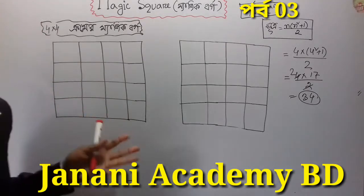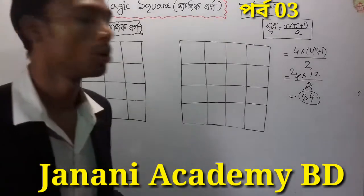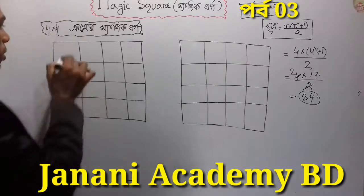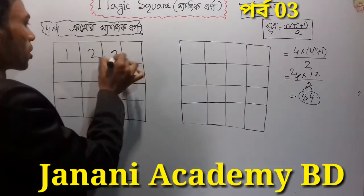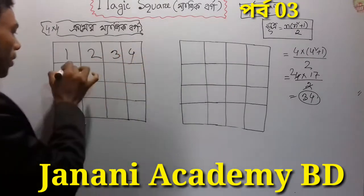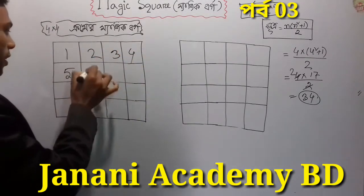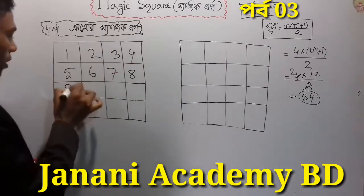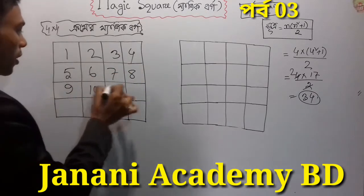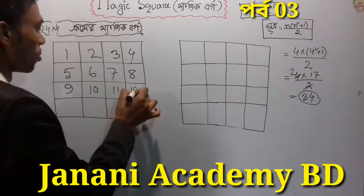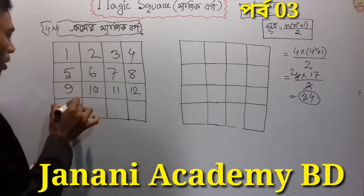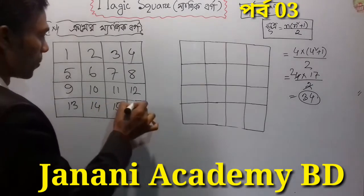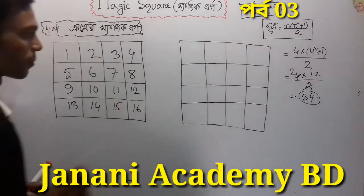How do we do this? We will see the first step. In the first step, we place 1, 2, 3, 4, 5, 6, 7, 8, 9, 10, 11, 12, 13, 14, 15, 16 into the grid.